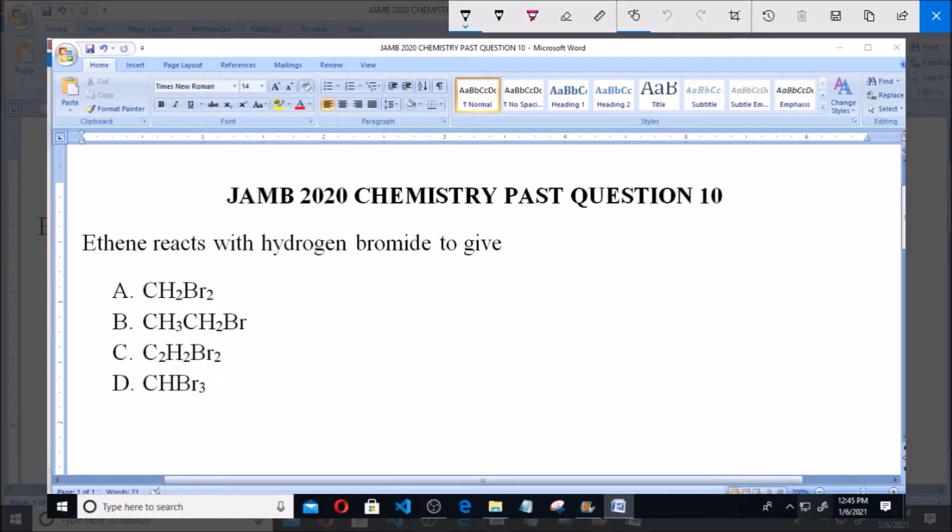Good day and welcome. I will be answering JAMB 2020 chemistry past question 10. Ethene reacts with hydrogen bromide to give dash.